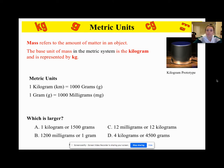So what is larger: A, one kilogram or 1500 grams? 1500 grams, good. B, 1200 milligrams or one gram? 1200 milligrams, good. C, twelve milligrams or twelve kilograms? Hopefully that one's easy. Twelve kilograms, good. And then D, four kilograms or 4500 grams? 4500 grams, good job.